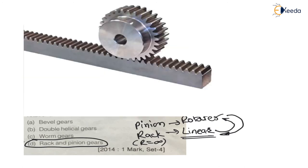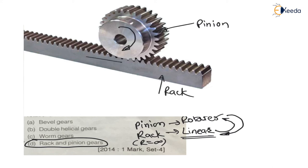Let us understand this diagrammatically. Here is the rack and the smaller one is the pinion. The pinion is rotating, and as the pinion rotates, the rack moves linearly. For clockwise rotation of the pinion, the rack moves towards the left — this is the linear motion of the rack. So for the rack there is linear motion, for the pinion there is rotational motion. The rack has infinite radius and the pinion has some finite radius.